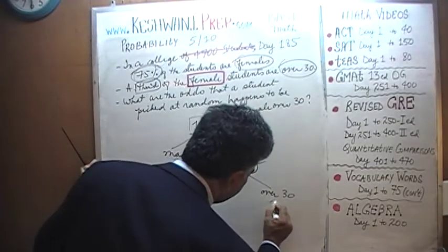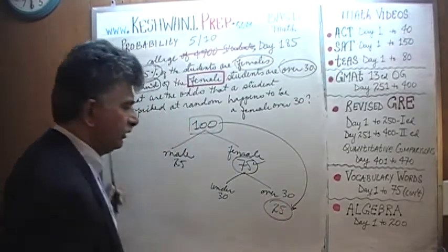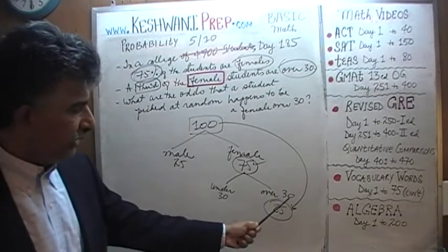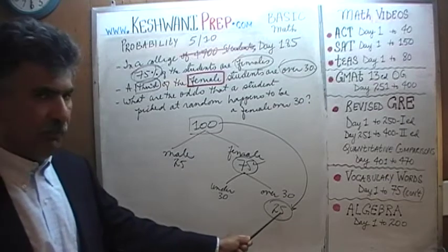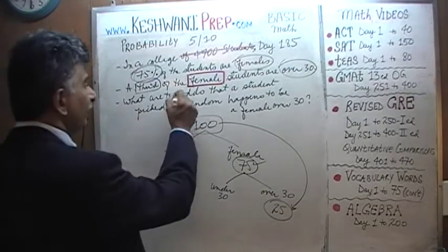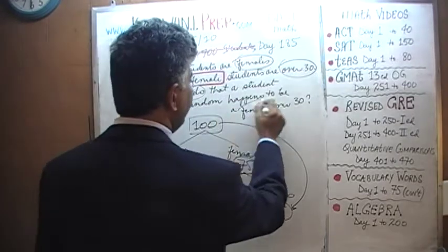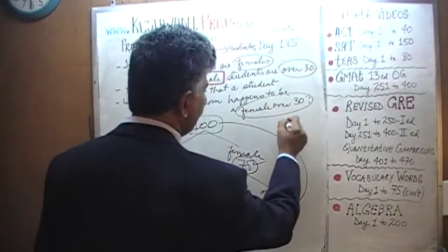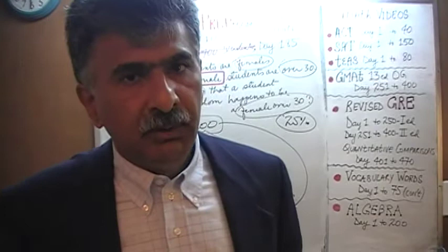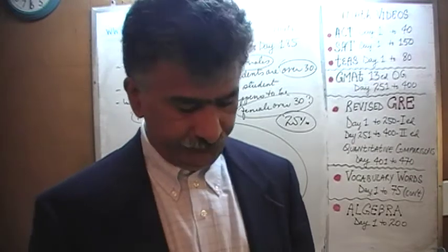25 students out of a total of 100 happen to be females over the age of 30. Therefore, the odds of picking a female over the age of 30 is 25%. There is a 25% chance that if you were to pick a student at random, that student will turn out to be not only a female, but an older female over the age of 30.